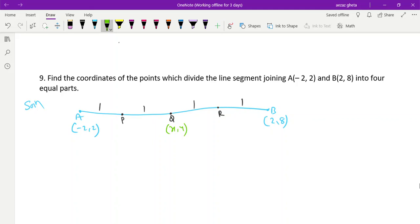You can say Q is the midpoint, right? Q is the midpoint of AB. So Q(x, y) is equal to (x₁ + x₂)/2, (y₁ + y₂)/2. x₁ is -2 here, we got it. So (-2 + 2)/2, (2 + 8)/2.